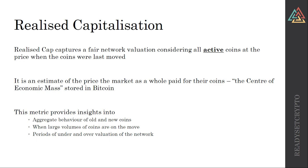What the realized cap does is capture a fair network valuation considering all active coins at the price when they were last moved. It's effectively an estimate of the price the market paid for their coins — one way I think of it is the center of economic mass of what's stored in Bitcoin; it's the average cost basis for the entire market. It gives a good gauge of what the market paid. It shows the aggregate behavior of both new and old coins, and is most valuable for picking periods of over and undervaluation.